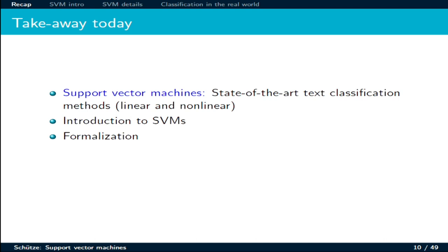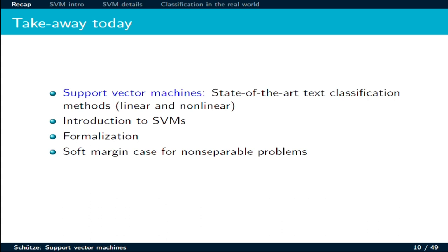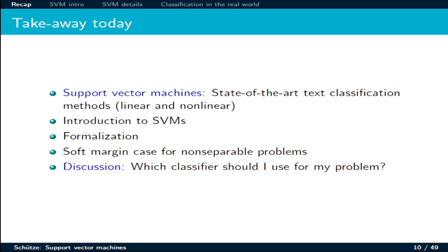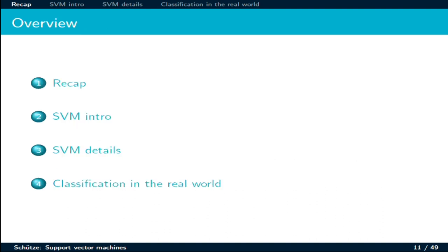Then we will see, as we observed in this example, what we can do when the classes are not actually separable — we have to accept some error and trade off between performance and errors. And then we will have a quick discussion on which classifier should I use for my problem.